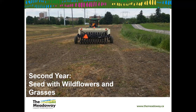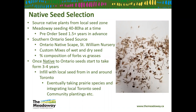Now moving into year two — seeding with wildflowers and grasses, typically happening early spring. We use a Truax seed drill. Currently, the Meadoway has been seeded by Ontario Nativescape. For native seed collection, it's easier to work with larger areas — less movement of equipment. We're typically working on 40 to 80 hectare parcels each year. If you want to order your plants, think 1.5 to two years in advance. I'd recommend custom seed mixes based on your soil types, and check local native suppliers for seed from your local seed zone.